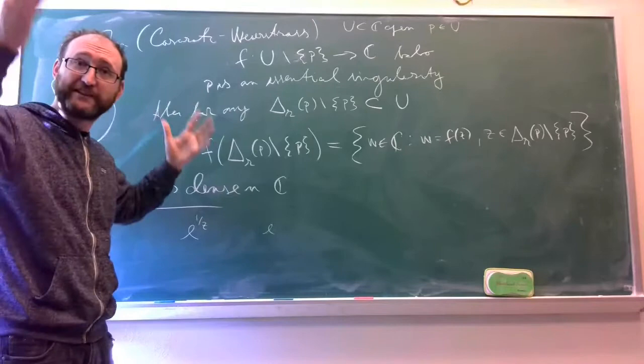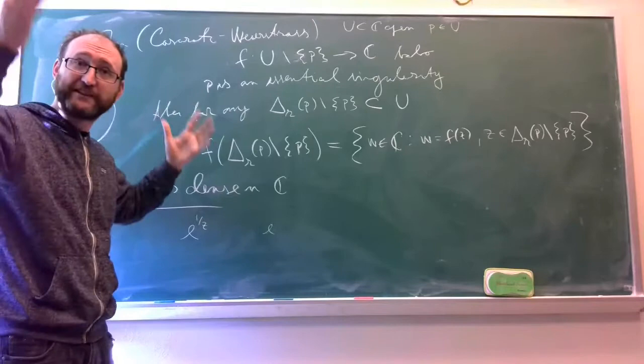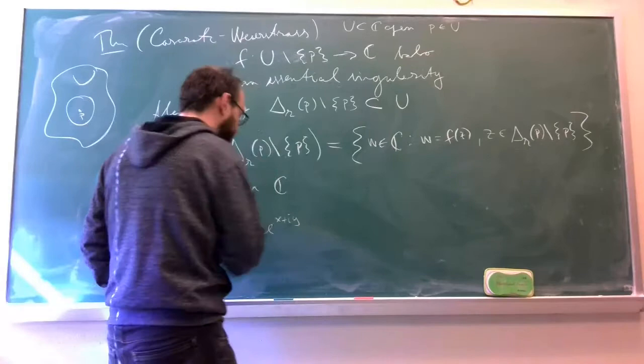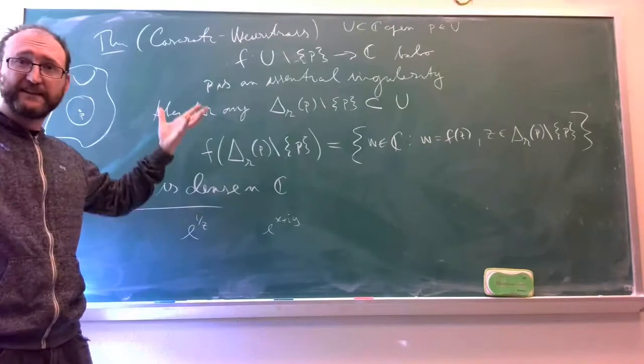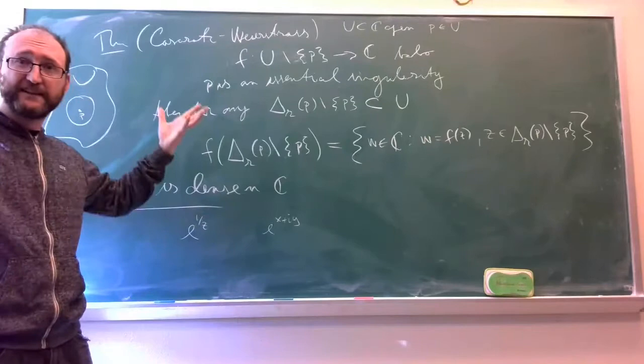1/z is all the complex numbers that are sufficiently far away from the origin. So it's better we're just talking about e^z, or we're just talking about the essential singularity at infinity. This thing is e^x times e^(iy).